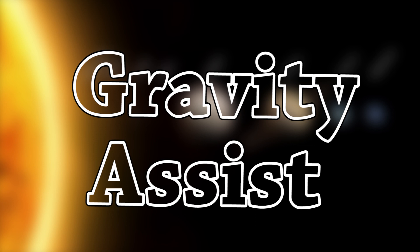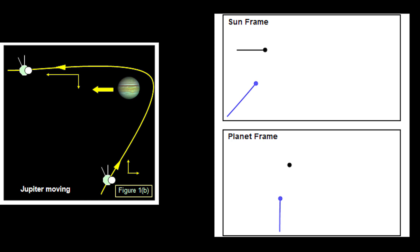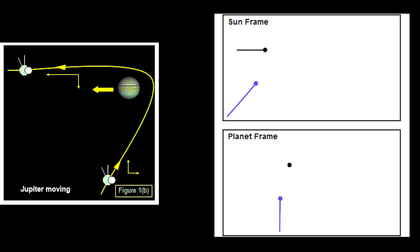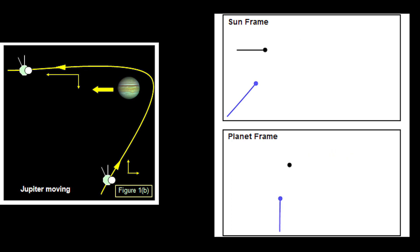So how does gravitational assist work? We have to keep in mind that the planet itself is moving around the sun. This motion of the planet around the sun helps spacecraft get a huge boost in velocity. As the spacecraft approaches behind the planet, the planet — moving along in its orbit — pulls on the spacecraft, causing an exchange of momentum between the spacecraft and the planet.